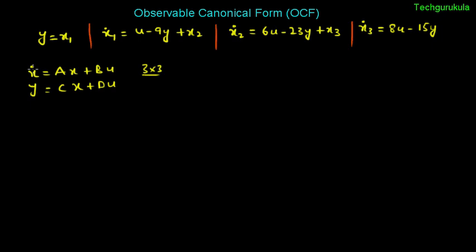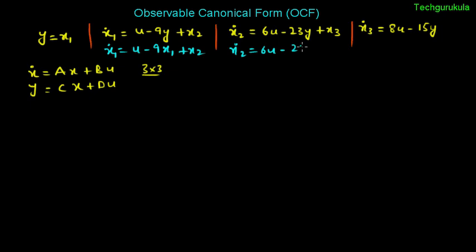The state equations must depend on x and u, not y. Since y equals x1, we substitute: x1-dot equals u minus 9x1 plus x2; x2-dot equals 6u minus 23x1 plus x3; and x3-dot equals 8u minus 15x1. Now all four equations are in terms of state variables.